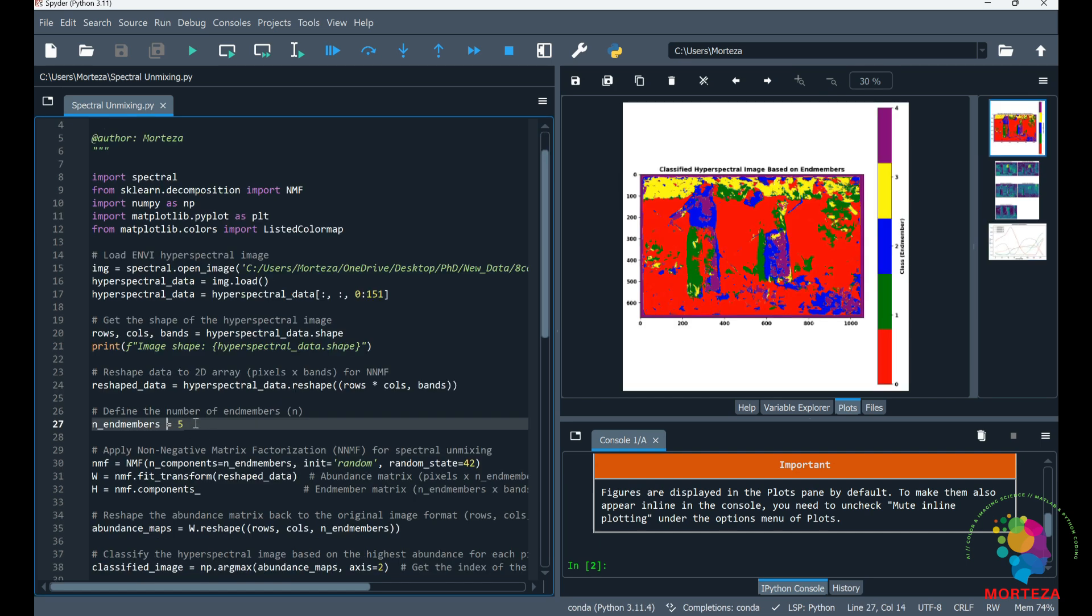So as you can see, you have to specify the number of endmembers yourself, which can be challenging sometimes, but you should just specify the number of distinct materials in your hyperspectral image. In later videos, I will also show you how you could specify the number of endmembers in your hyperspectral data at a higher accuracy.